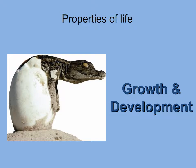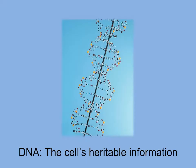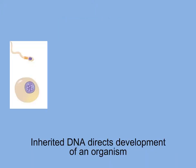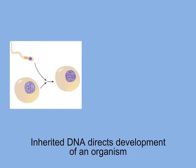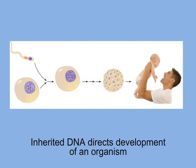Our next property involves information. Life is not static — it changes from moment to moment, and even a unicellular organism grows, divides, and develops. The instructions to direct the development of a life form are written in molecules called DNA, which is also the molecule of heredity passed from one generation to the next. Development includes all the changes that take place during an organism's life. As you can see, this baby is not the same as a fertilized egg or a full-grown adult.